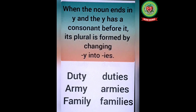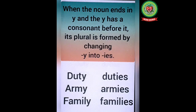First of all, let's revise the rule I discussed with you last day. When the noun ends in Y and the Y has a consonant before it, its plural is formed by changing Y into IES. For example: duty → duties, army → armies, family → families.